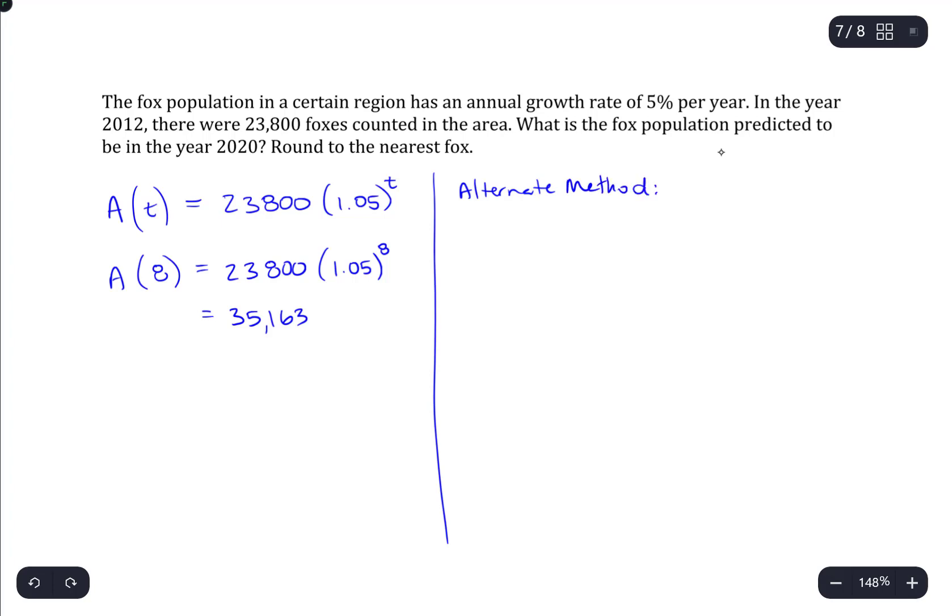The alternate method uses the general growth and decay model, which is y equals y naught e to the kt. So, y naught is the initial population. We do know that. So, we could say this is 23,800.